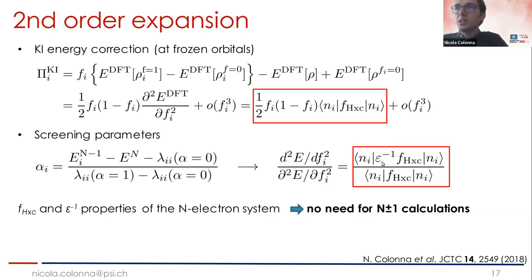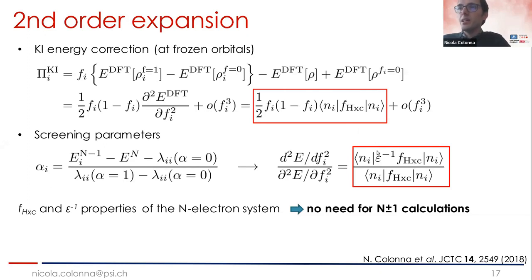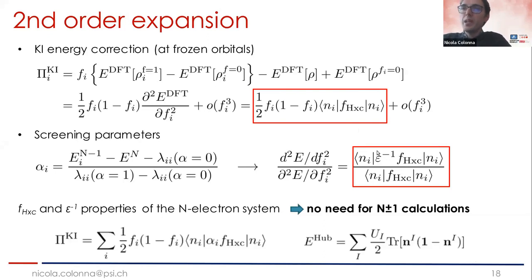This second-order approximation is actually very good in many cases, because the DFT energy we're trying to correct is typically almost quadratic in the occupation number. At second order in the occupation, you exactly correct for the self-interaction error, which is the main source of deviation from piecewise linearity. What you leave outside are only higher-order terms — beyond second order in the exchange-correlation — which are typically much smaller.